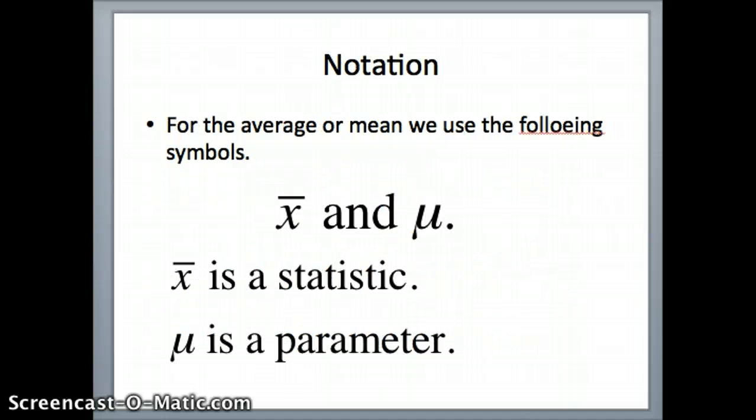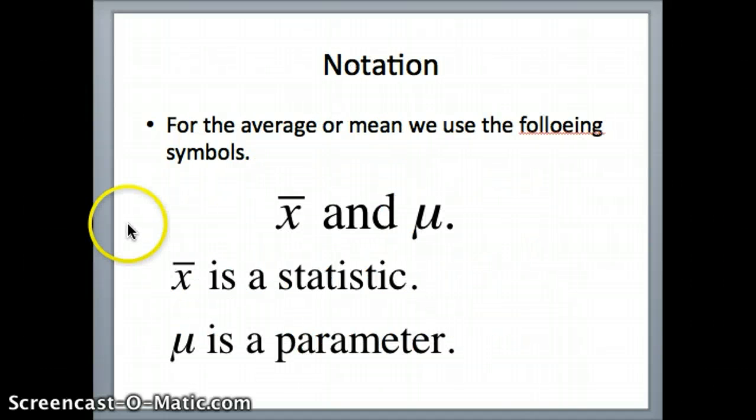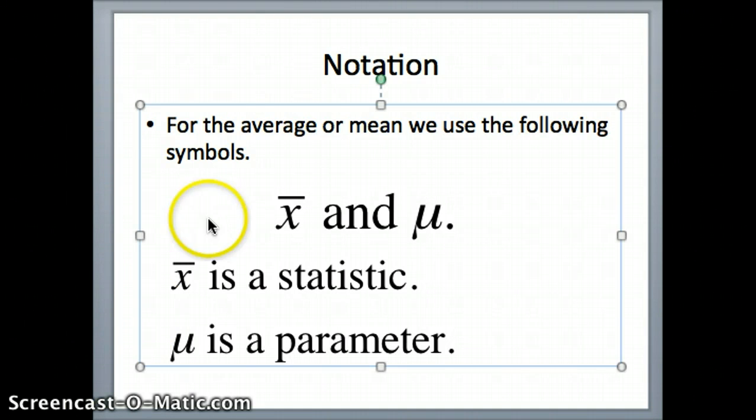Now it's important to know notation. We're talking about averages. In statistics, we like to use the word mean to represent an average. And we use these symbols. So x-bar, x with a line on top is a statistic. The Greek letter mu is a parameter. Both of these are means.